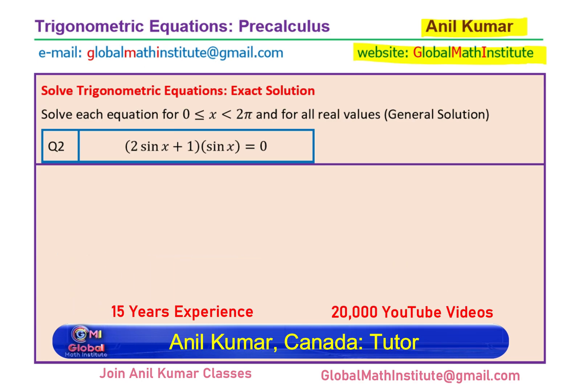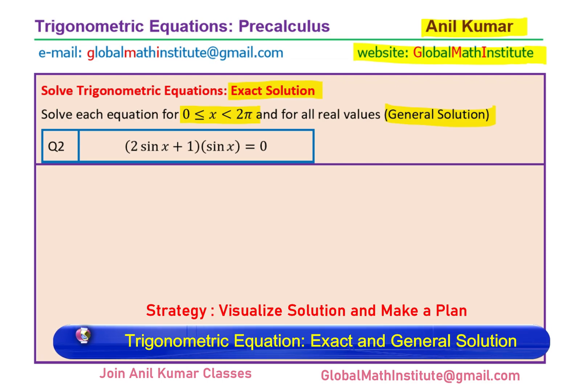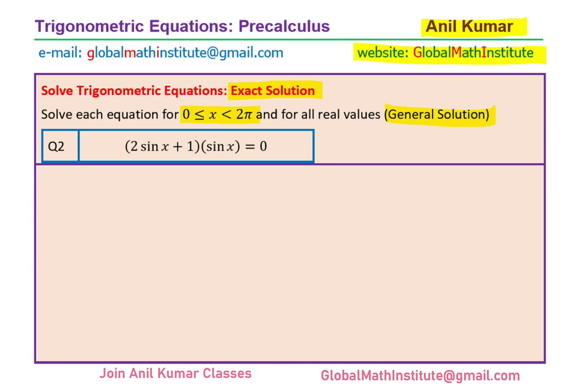Here are some questions from our subscribers. It seems many students want to understand how to find exact solutions and also general solutions for trigonometric equations. The request came to work in radians, so I will be working for x being 0 to 2π and then providing general solutions. The equations are simple; however, the main idea is to learn the technique of writing the solution as required.